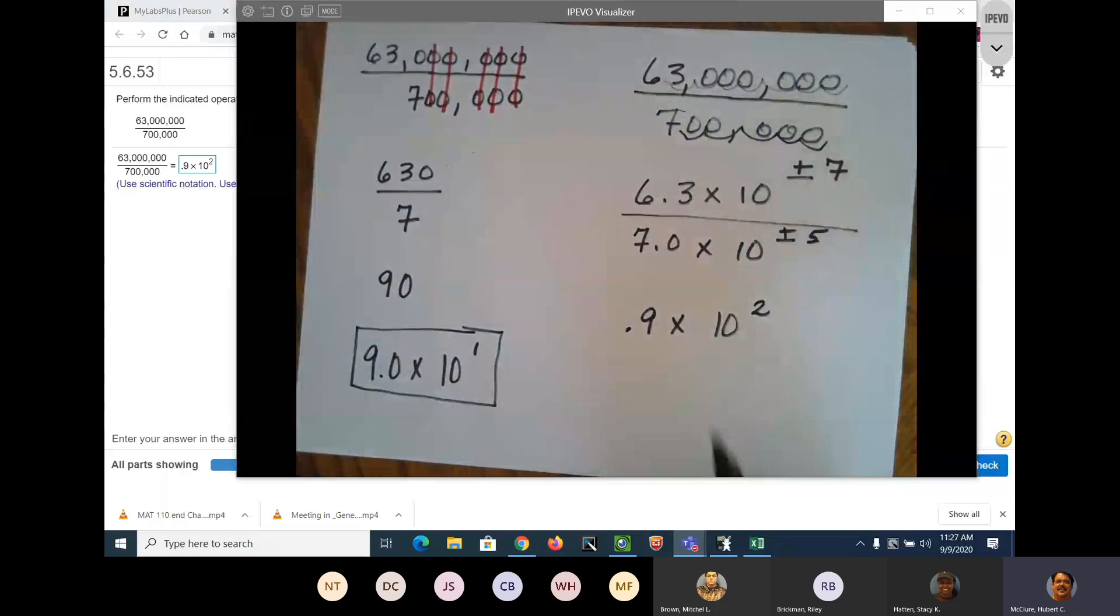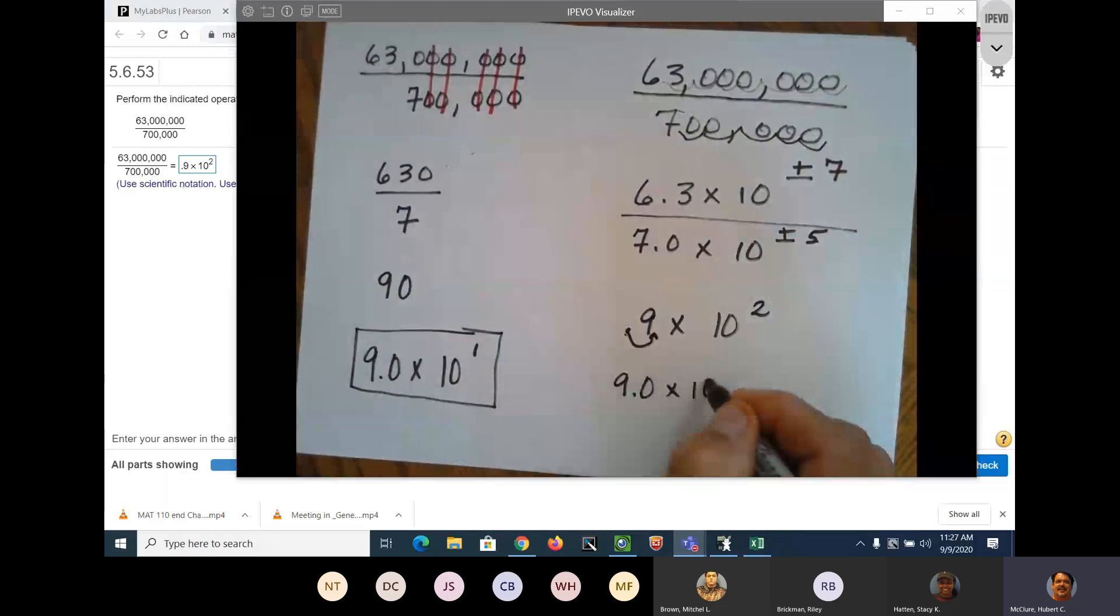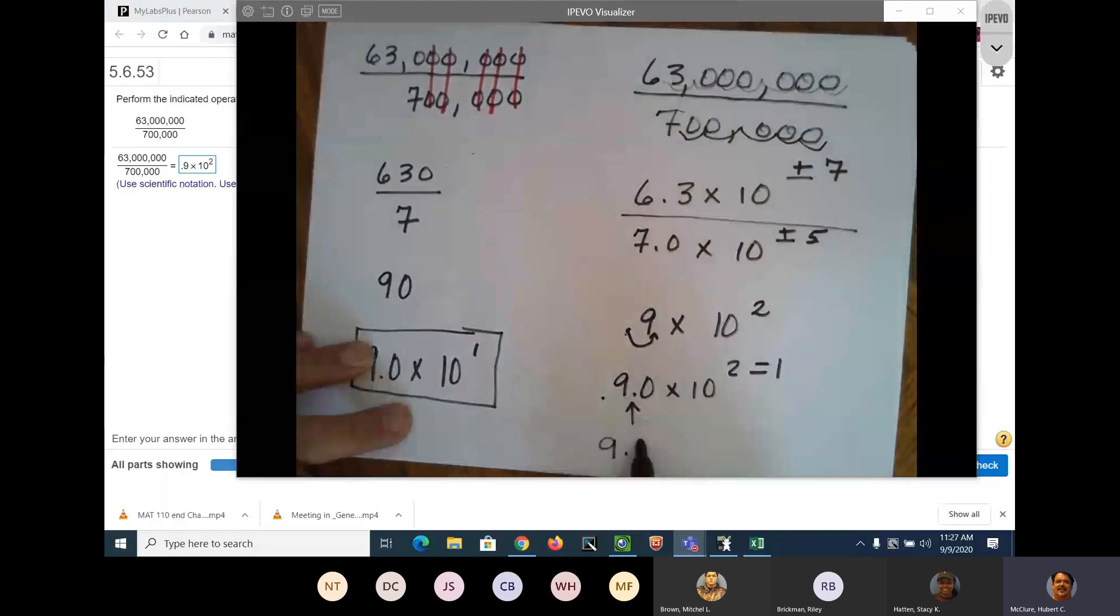This is not in scientific notation: 9.0 times 10 to the 2. Which way do I move this in my head to get it back the way it was? To the left. So your answer is 9.0 times 10 to the first.